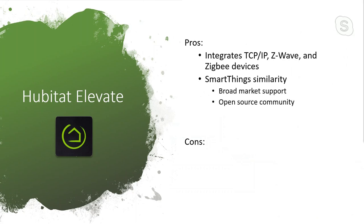One of the main reasons I went with Hubitat is it's very similar to SmartThings — it was actually started by former SmartThings engineers — so it has broad market support. There's a great open source community that shares device drivers and automation code. Another advantage is local execution, unlike SmartThings which is mostly cloud-based. And finally, Hubitat has a really easy RESTful API.